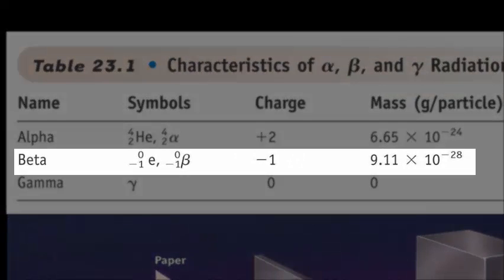A beta particle is actually nothing more than an electron. It's a very high energy electron. And so its symbol is an E, which is what we use for electrons. It has a mass number of zero because it has no protons and no neutrons.